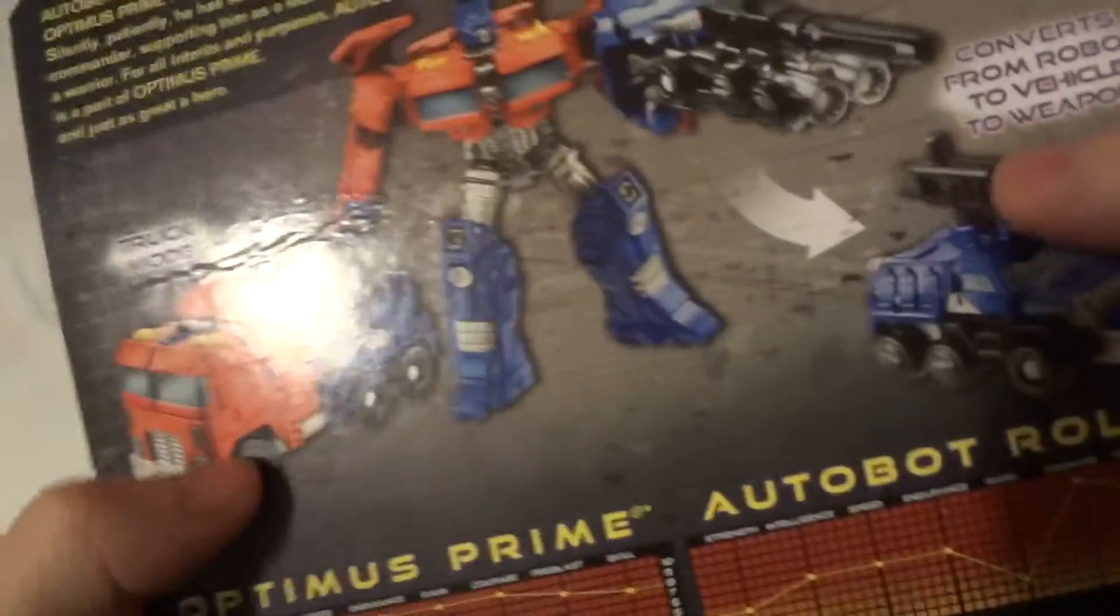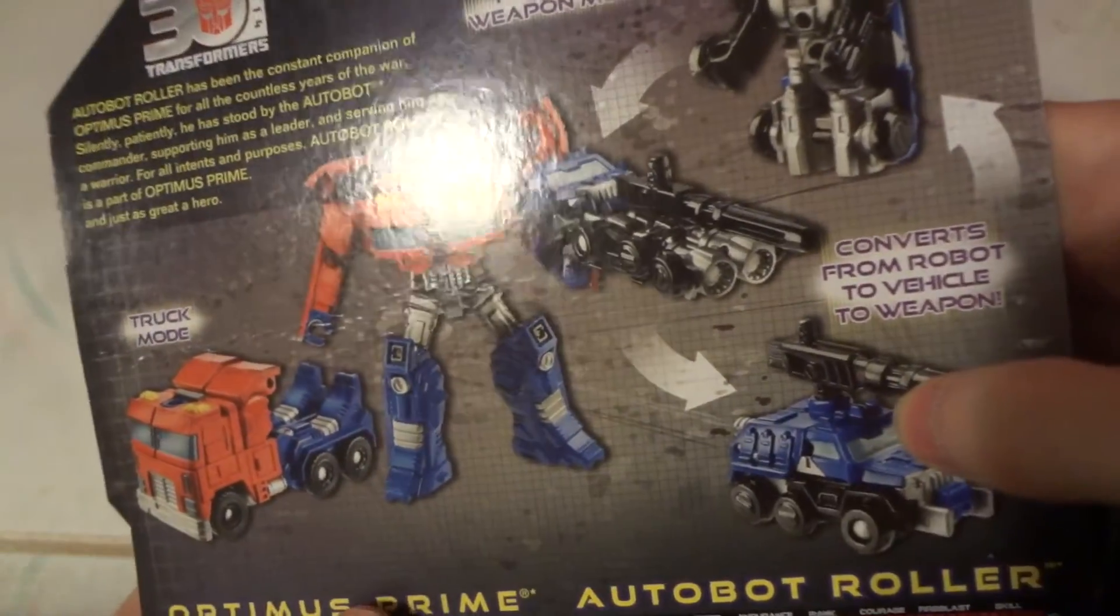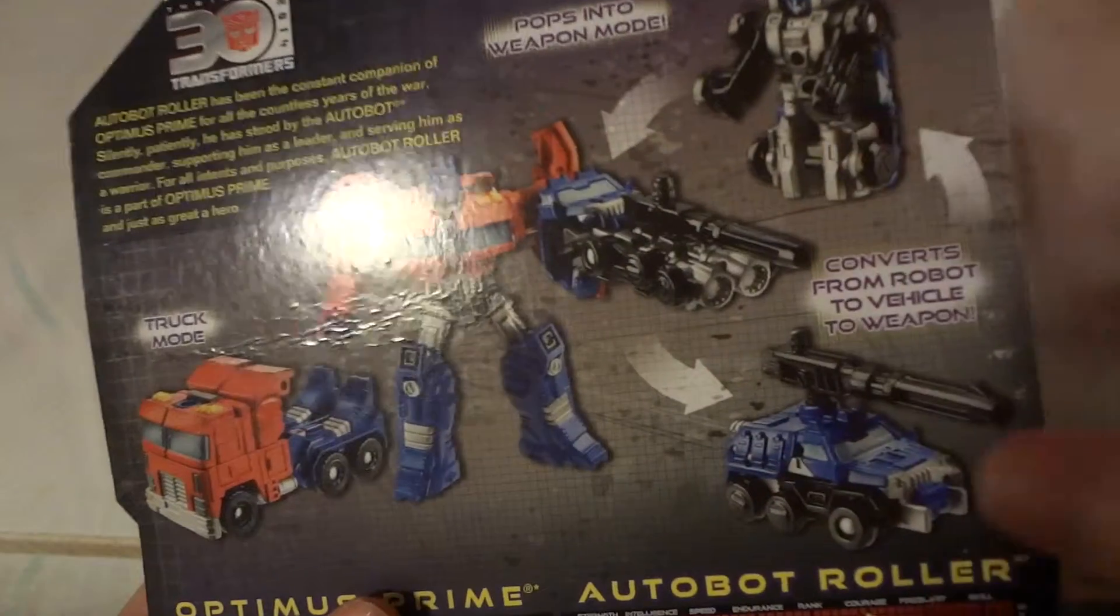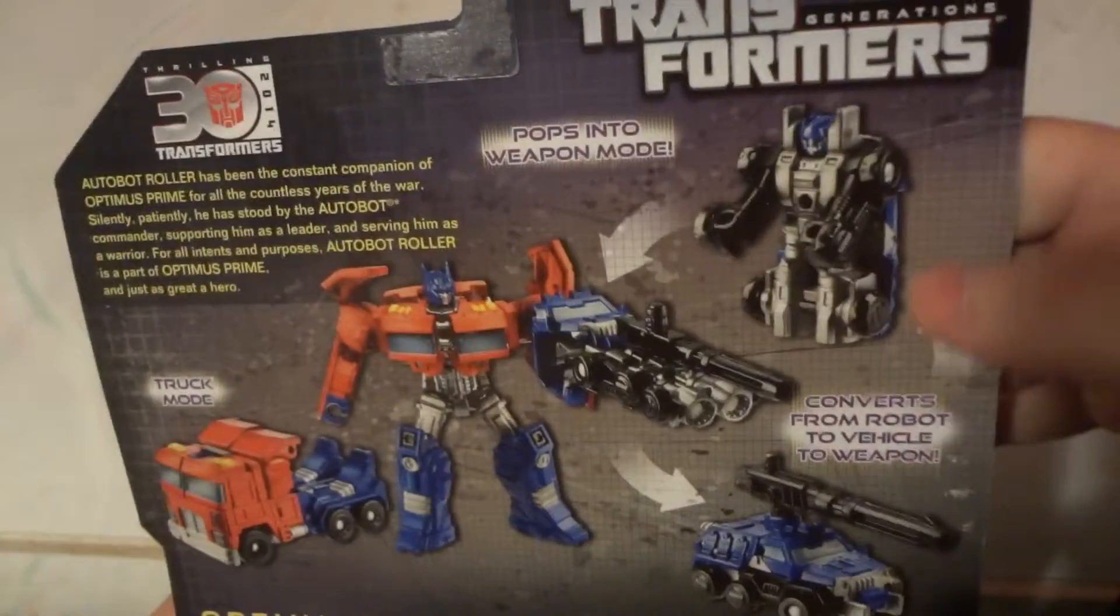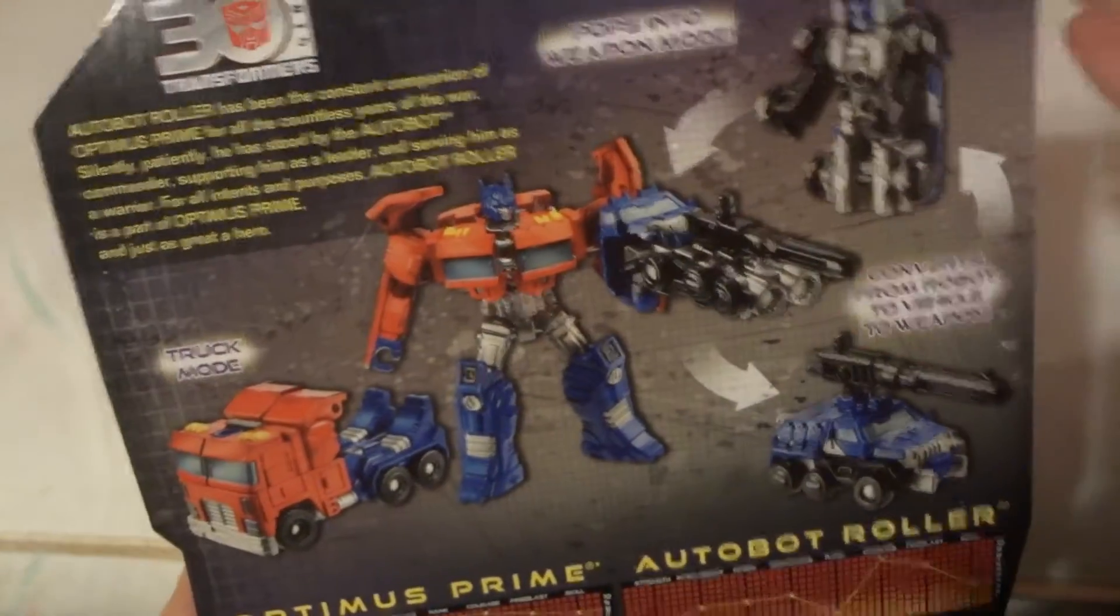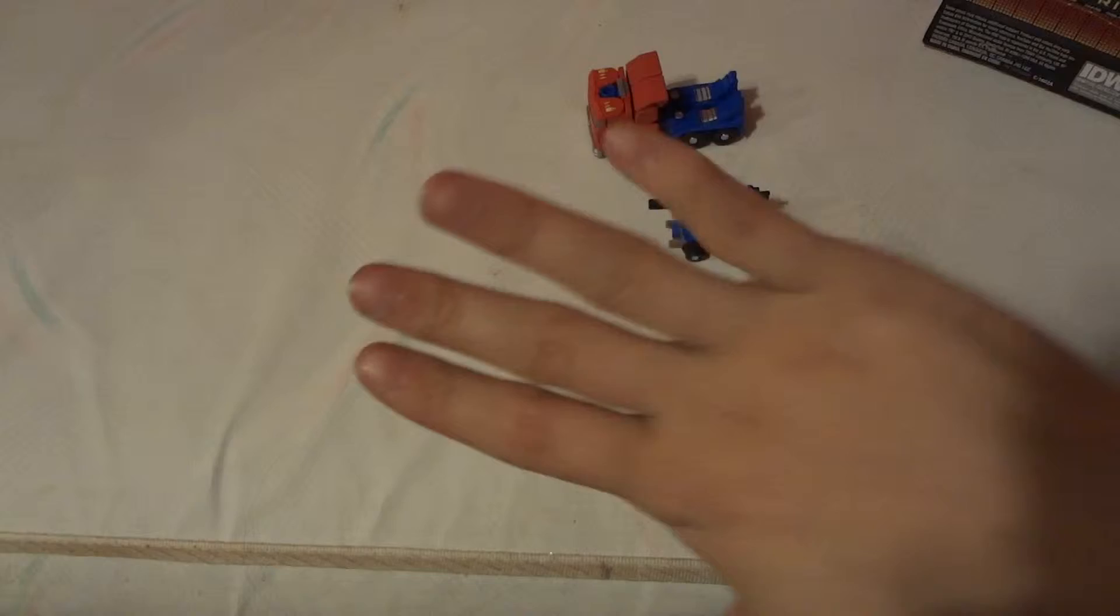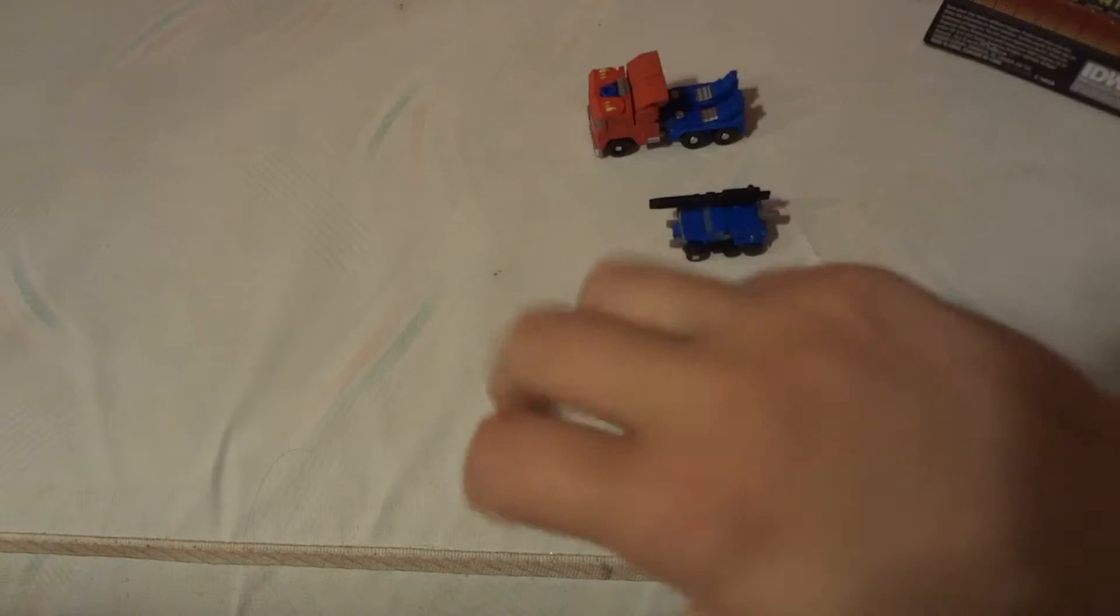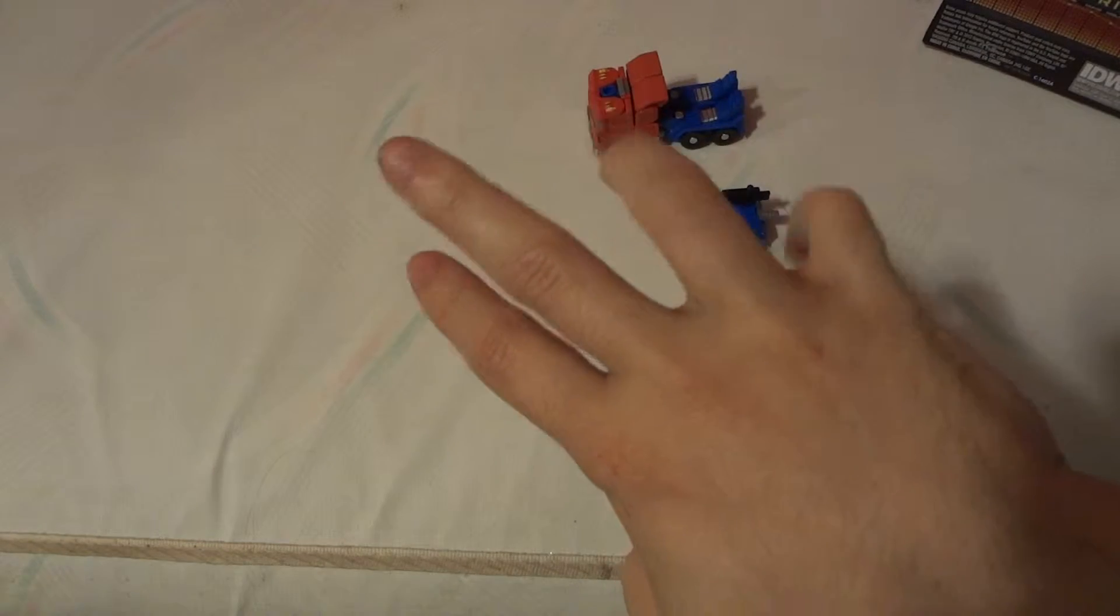Like I was saying, Autobot Roller actually has three transformation modes that they are talking about: Vehicle Mode, Robot Mode, and Weapon Master Mode. It kind of has a hidden fourth weapon mode, or a hidden fourth mode.